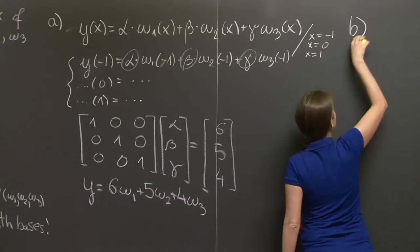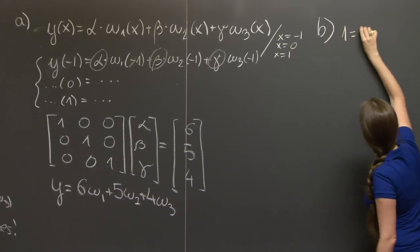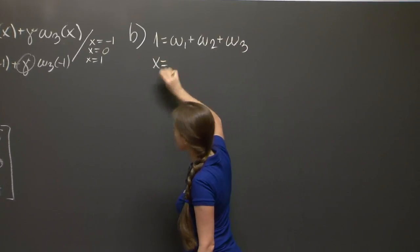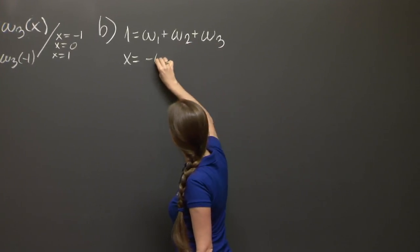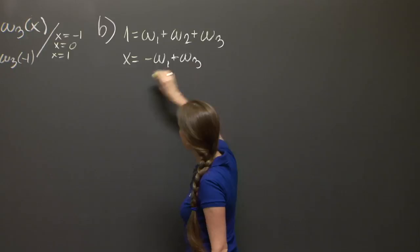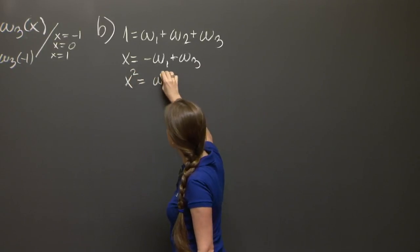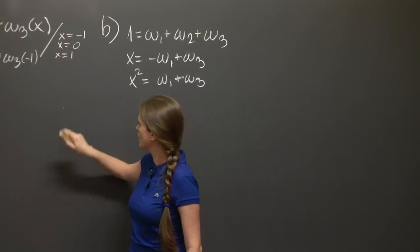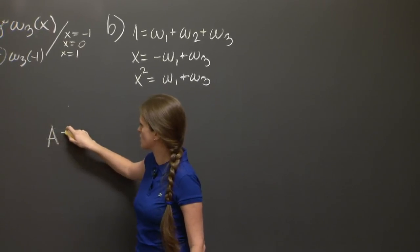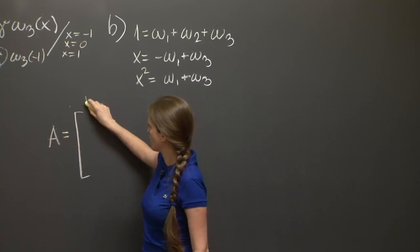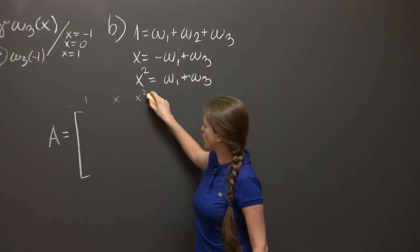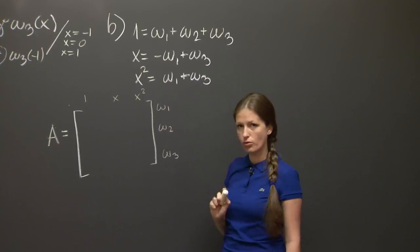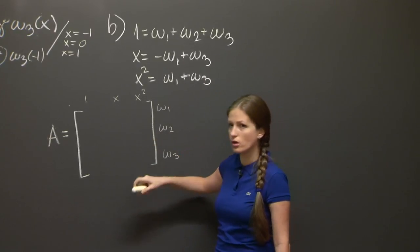And from this we can already conclude, let's go to part b here, we can conclude that 1 = w1 + w2 + w3, that x = -w1 + w3, and that x squared = w1 + w3. And from this we can immediately write one change of basis matrix.